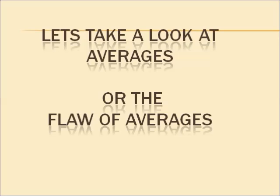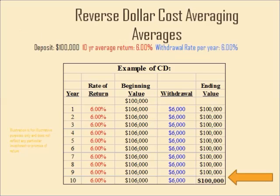Let's take a look at averages, or as I call it, the flaw of averages. A lot of times we refer to averages or reverse dollar cost averaging. I just want to show an example of how an average number could mean different things at different times. In this example, we have a deposit of a hundred thousand dollars.